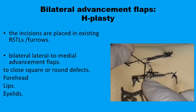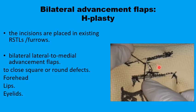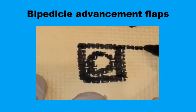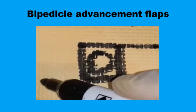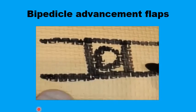We will start with the basic form: the H-plasty, in which the incisions are placed parallel to relaxed skin tension lines — either in the forehead, the lips, or the eyelids. You recruit tissues from the two sides of the defect, and once these two pedicles are sutured they produce an H-shaped outcome, which is why it's called an H-plasty.